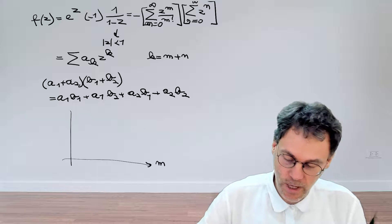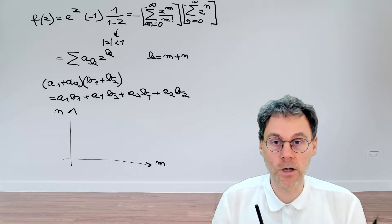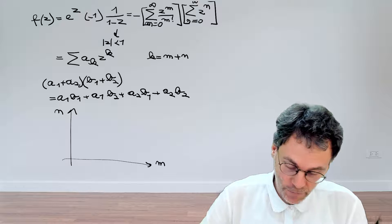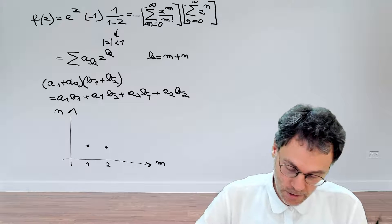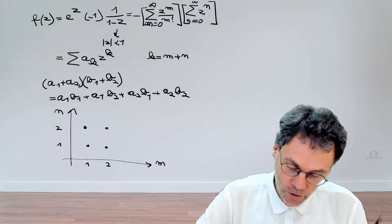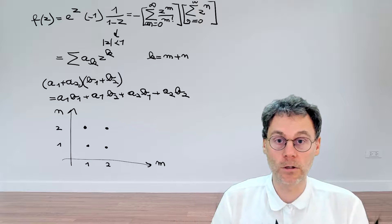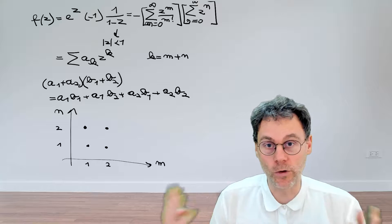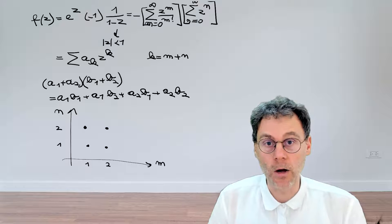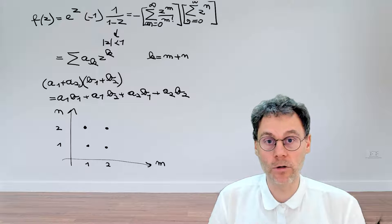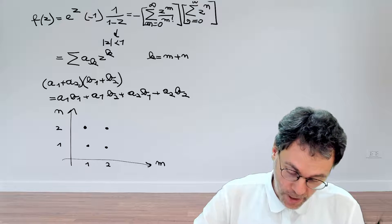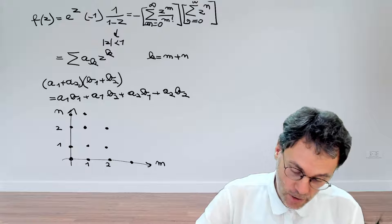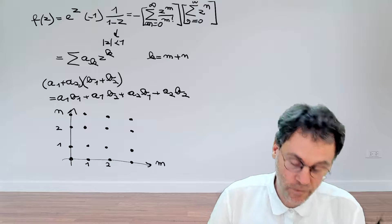So what we could also do is represent this thing graphically if we have a diagram. For example, on the horizontal axis, we have the summation index m and on the vertical axis, we have n. So we could represent these four different terms by four different dots. So let's say that this is one and this is two, one and two. So each of these four different dots corresponds to a certain term when we evaluate the product of these two mini series. If we had three by three terms, we would have had nine terms.